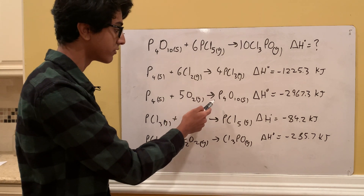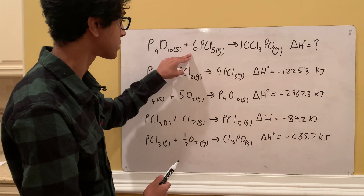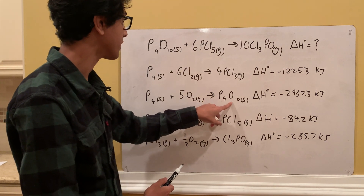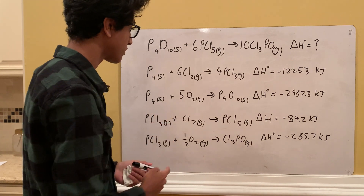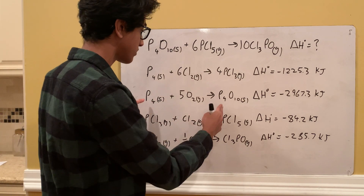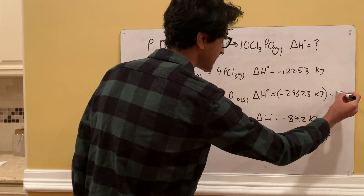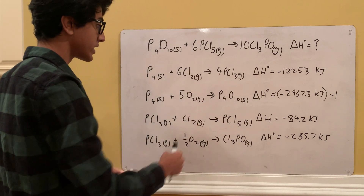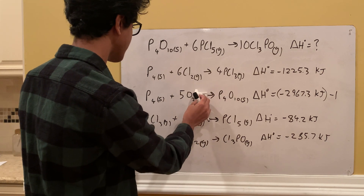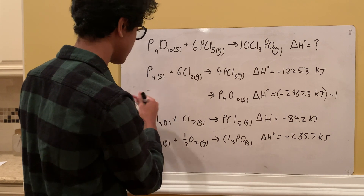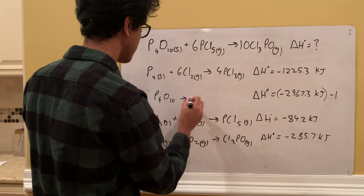The next reaction is P4 plus 5O2 goes to P4O10. O2 doesn't show up in the original, but P4O10 shows up on the left side of the original. So we want P4O10 on the left side of this reaction too. To do that, we reverse the reaction and multiply the change in enthalpy by negative 1, making the number positive.